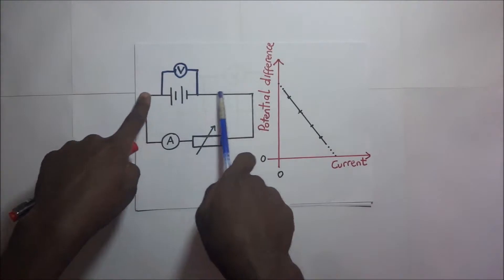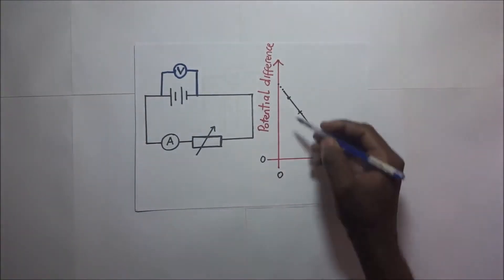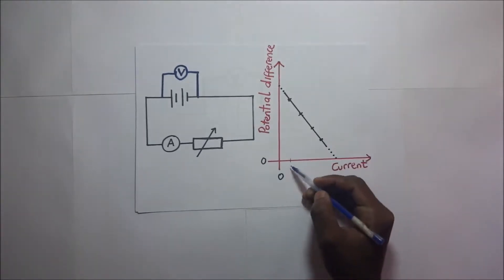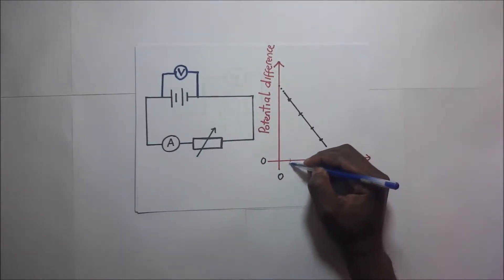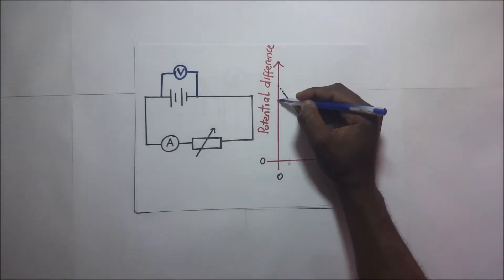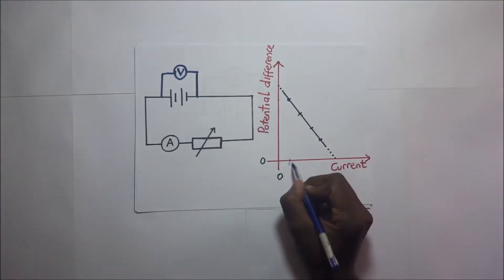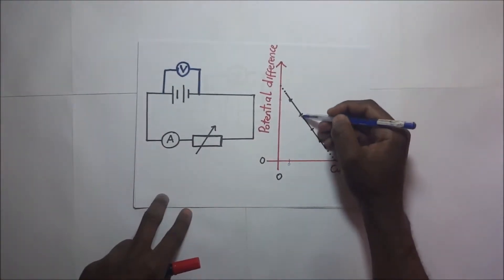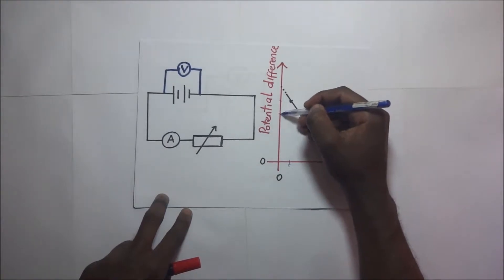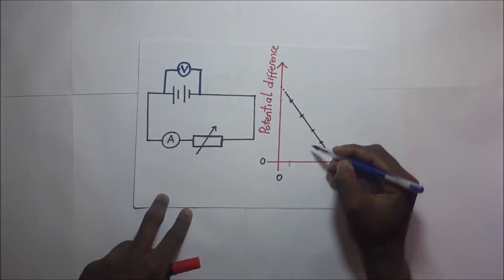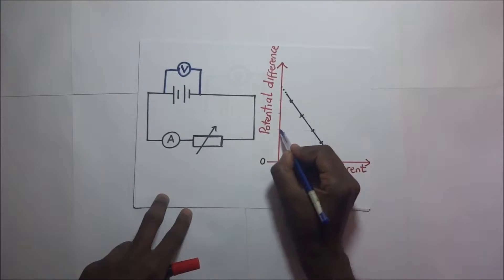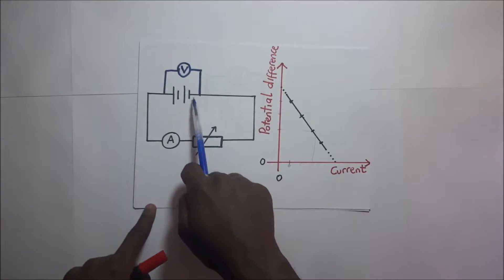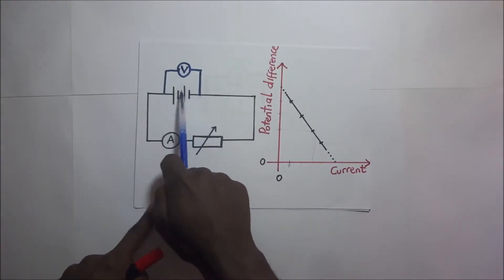From this graph, we can see that as the amount of current being drawn out increases, it has a corresponding potential difference. As you increase the amount of current drawn out of this cell, the potential difference drops. The more the current being drawn out, the more the potential difference across that cell keeps dropping.